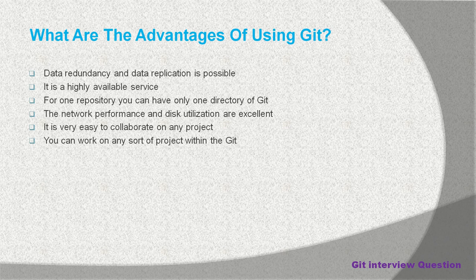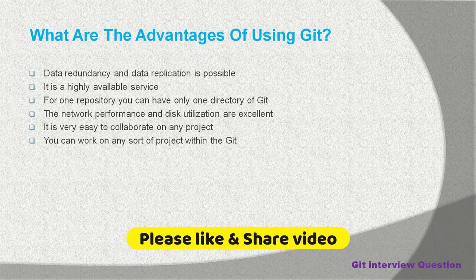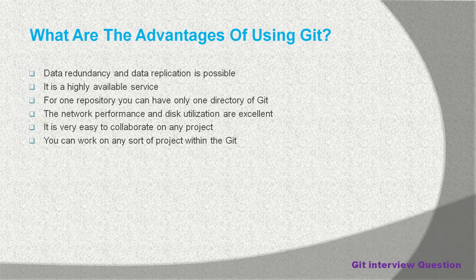Last but not least, you can work on any sort of project within Git. You may have many repositories and you can work on any number of them at a time — you just need to clone each repository on your local machine. To switch between projects, you switch to that repository and work on it. So these are the advantages of using Git. I hope you understood. Thank you for watching this video, and see you in the next video tutorial.